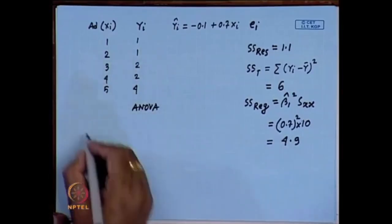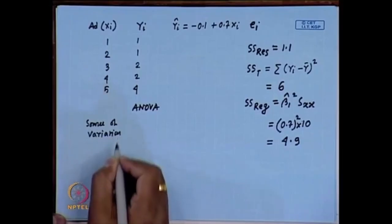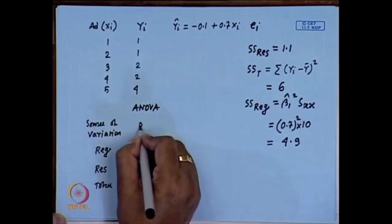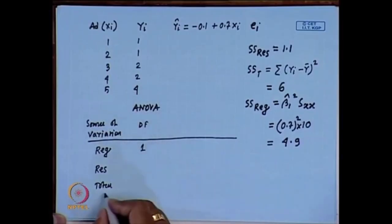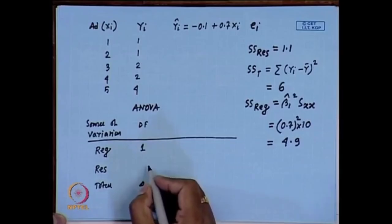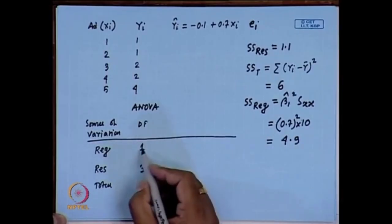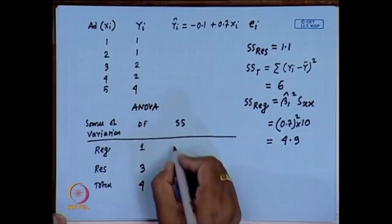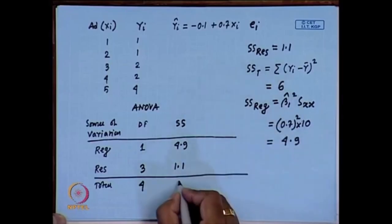What we need to compute is the total variation: SS_T = Σ(yᵢ − ȳ)². You can check that ȳ = 2, and SS_T = 6. Also, SS_regression = β̂₁²S_xx = (0.7)² × 10 = 4.9. So the ANOVA table for this problem has: regression with df = 1, SS = 4.9; residual with df = n − 2 = 3, SS = 1.1; total with df = n − 1 = 4, SS = 6.